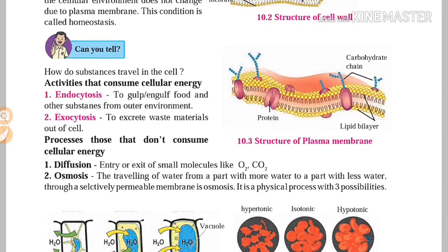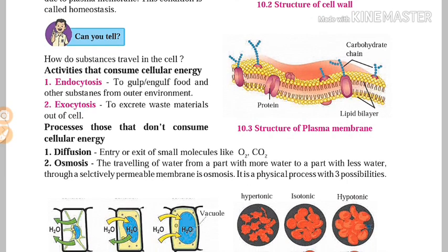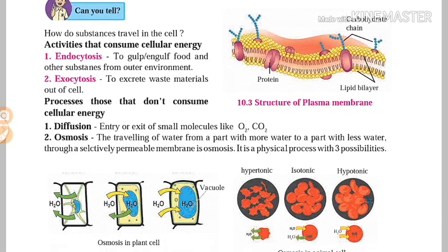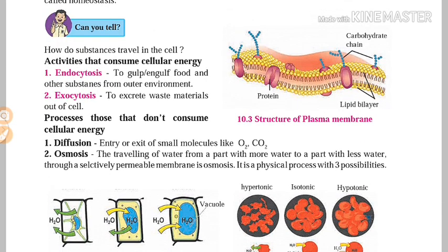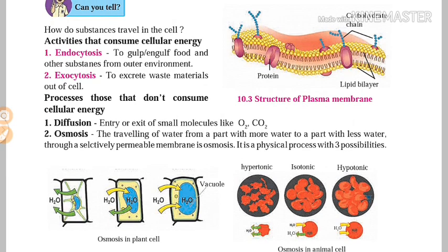There are two types of processes by which substances travel in the cell. The first type consumes cellular energy, and the second does not. Endocytosis means the cell accepts material from the outer environment, like water. Exocytosis means the cell excretes waste material out of the cell. Both endocytosis and exocytosis consume cellular energy.